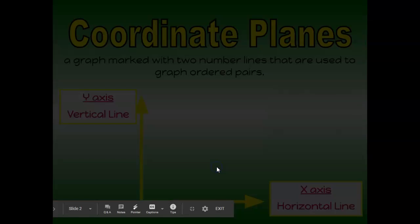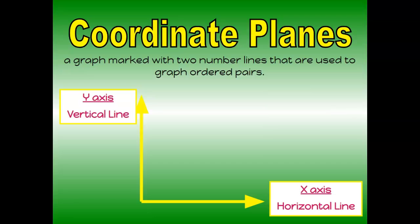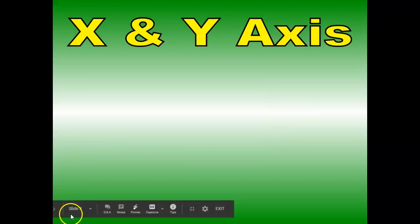Let's do a little bit of vocabulary. First, a coordinate plane is a graph marked with two number lines that are used to graph ordered pairs. We have our x-axis and our y-axis. The x is the horizontal line and the y is the vertical line. This spot right here that is zero, zero is our point of origin where the x and y axis intersect.